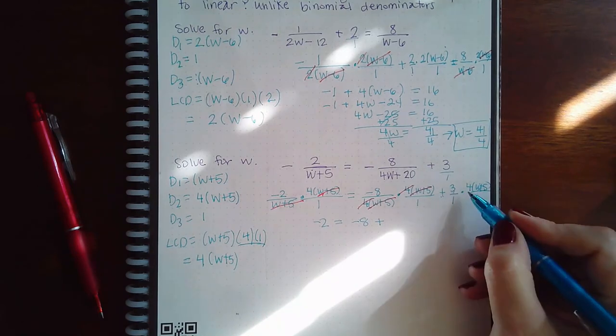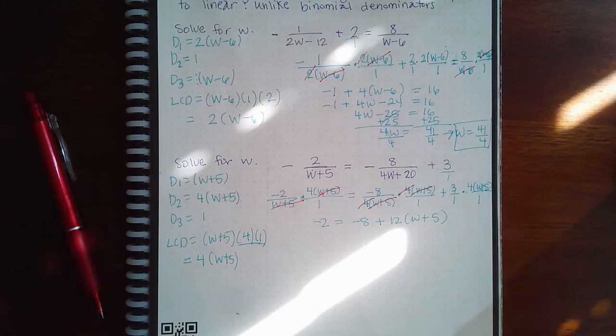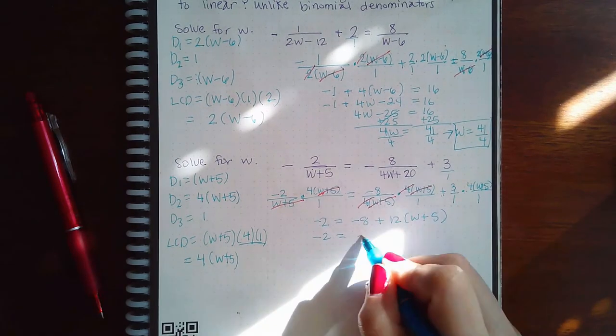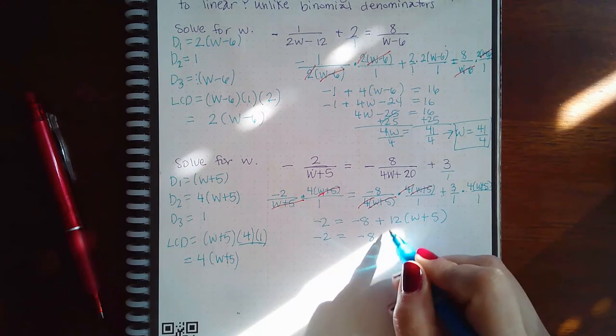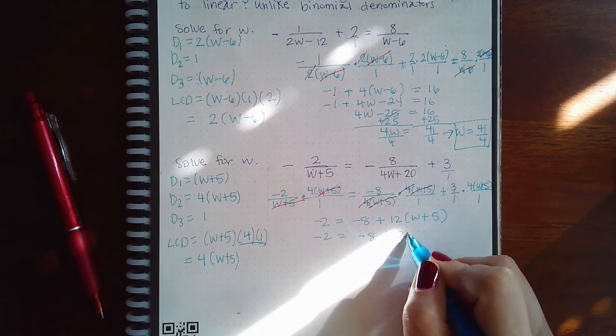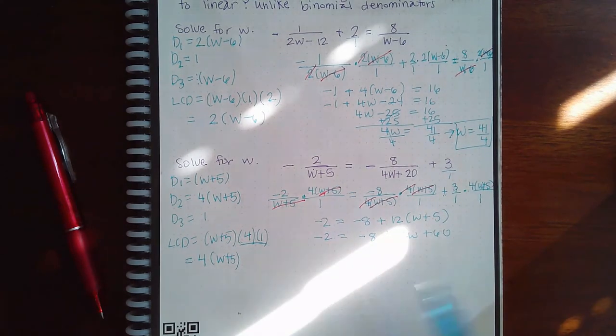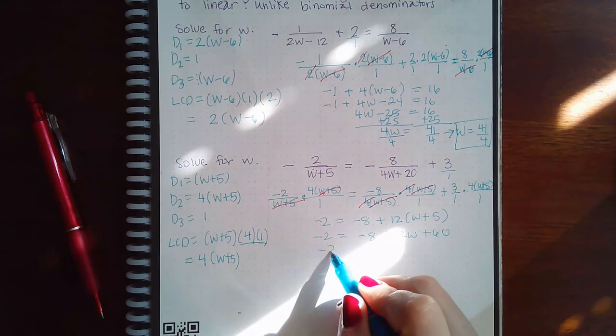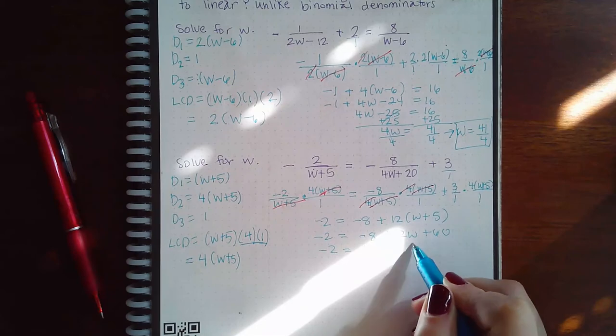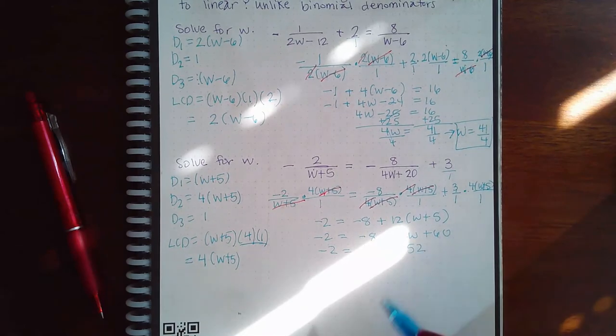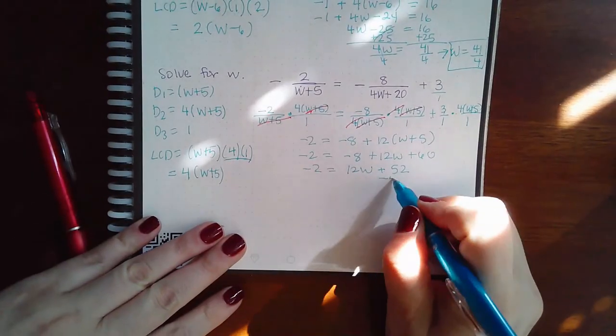So we're working with negative 2 equal to negative 8 plus this times this times this. So let's multiply positive 3 times positive 4. So this becomes positive 12 W and positive 60. Then we can combine those like terms over there. So positive 12 W plus 52.